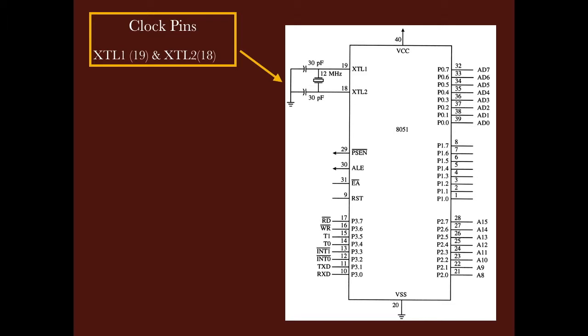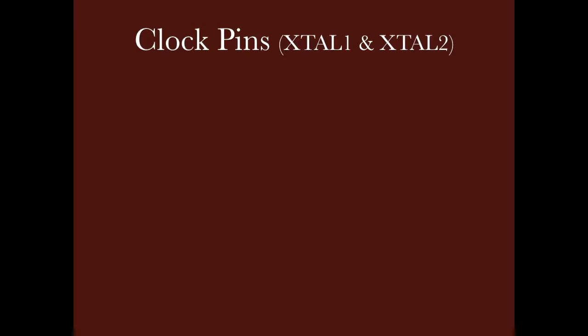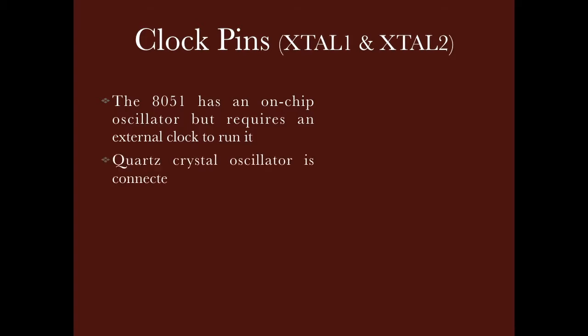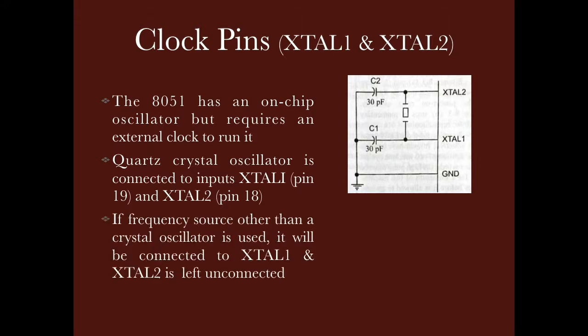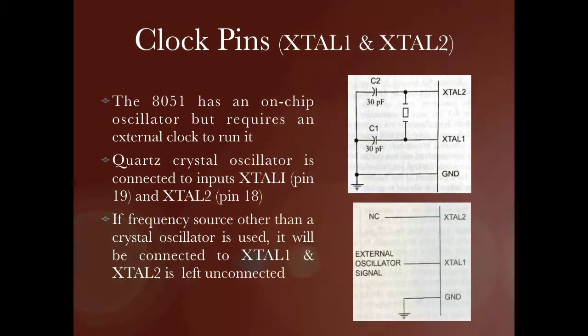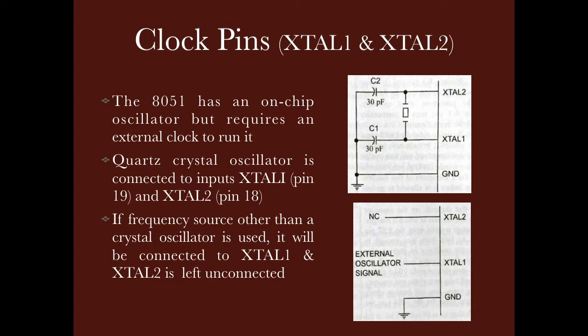After reset pin, we will come to the clock pin. The clock pins are 18 and 19, XTAL1 and XTAL2, which stand for crystal 1 and crystal 2 pins. As we discussed earlier, there is an on-chip oscillator, but it needs an external clock to run. The external clock is provided by a quartz crystal oscillator, connected between the two pins. If we want to use an external oscillator instead, we give the clock signal on XTAL1 and XTAL2 is left unconnected.